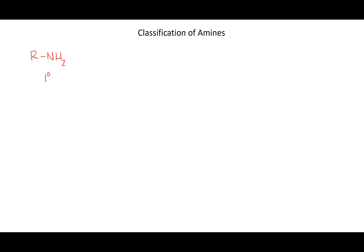Primary amines are when nitrogen has two hydrogens and one alkyl group. When talking about primary, secondary, and tertiary, we count the number of alkyl groups attached to the nitrogen. If we have a nitrogen with two alkyl groups, that's a secondary amine. Three alkyl groups is a tertiary amine, and in each case the nitrogen has a lone pair.